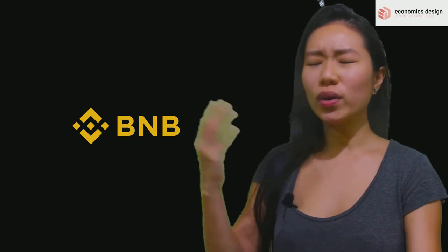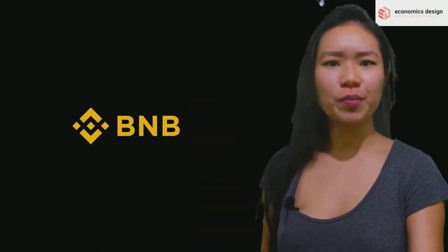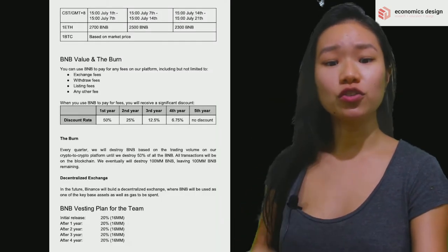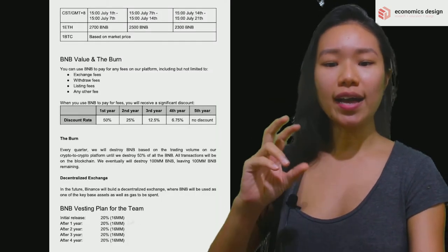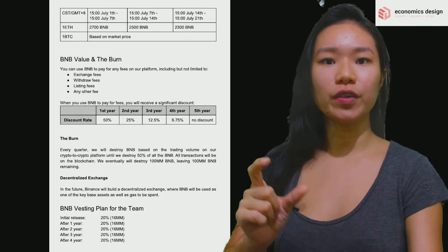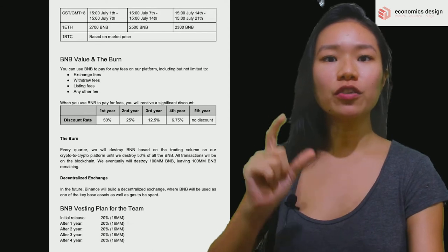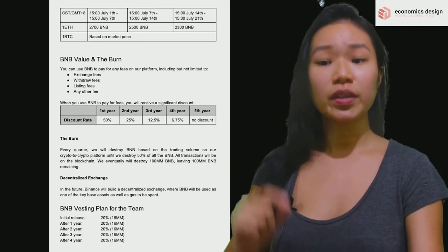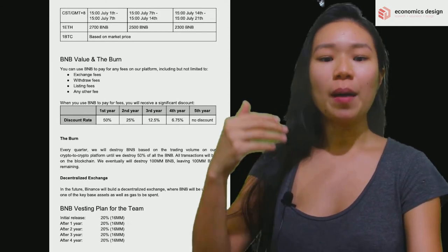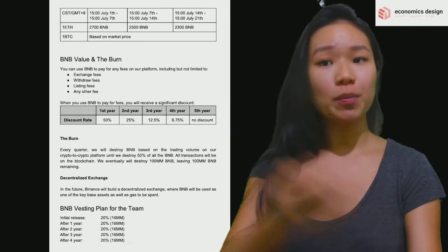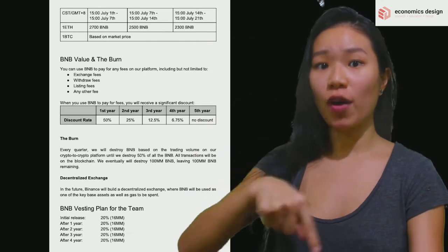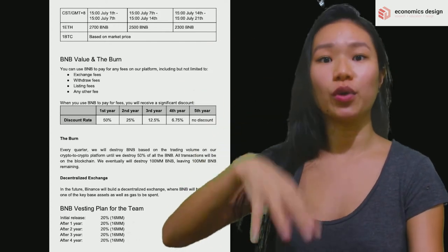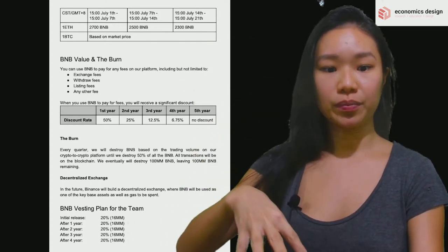For BNB, what is the main objective? The main objective is to use it as a utility token with the function of getting a discount on trading fees. The objective might change in the future, but that's the objective right now, today. It's what we focus on. It's what we design with.